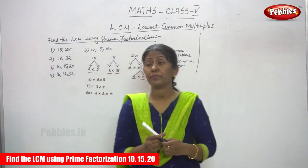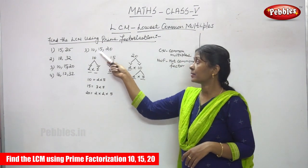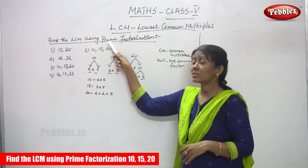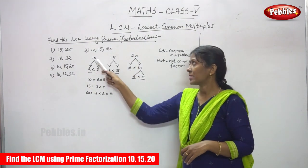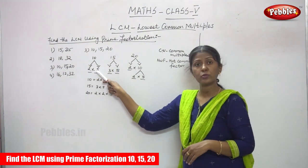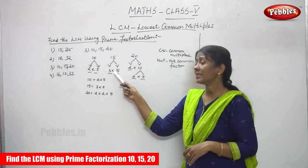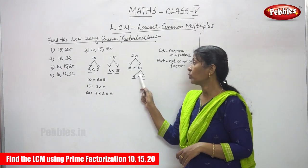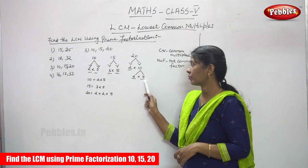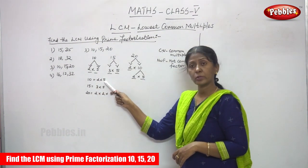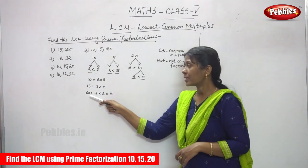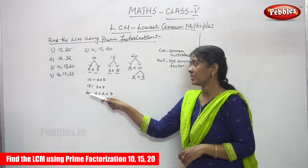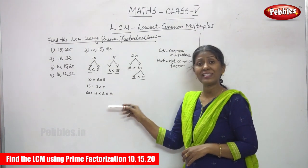So to explain: 10, 15, and 20 are the three numbers given in the question. You have to find the LCM for these three numbers using the prime factorization method. The factor of 10 is 2 into 5, the factor of 15 is 3 into 5, and the factor of 20 is 2 into 2 into 5. So now we have found the prime factors for 10, 15, and 20.